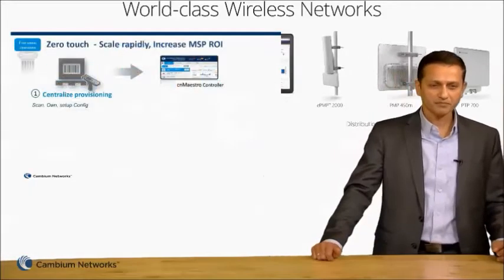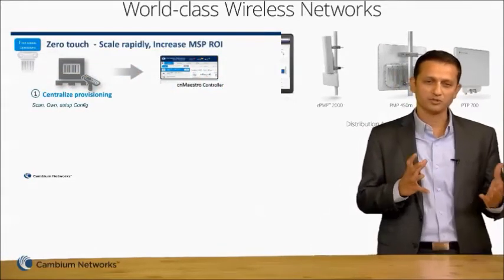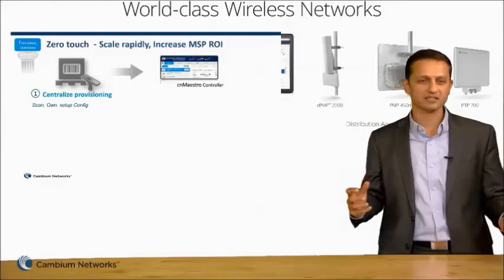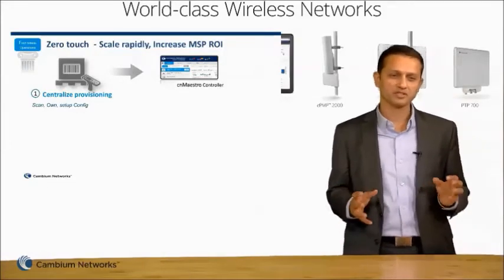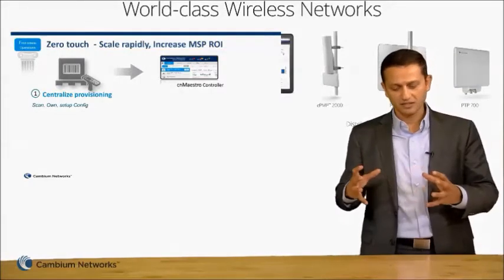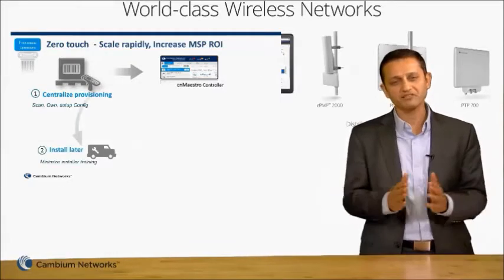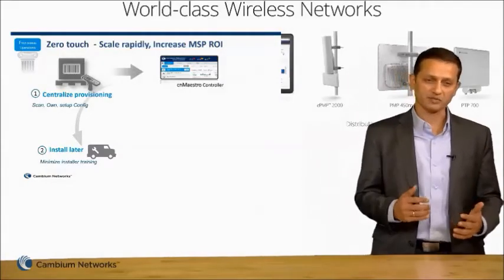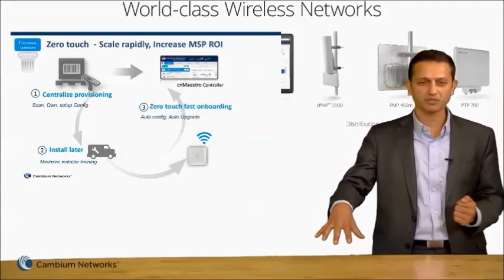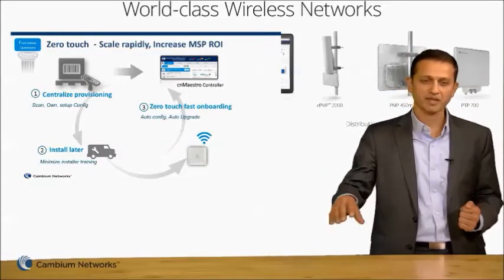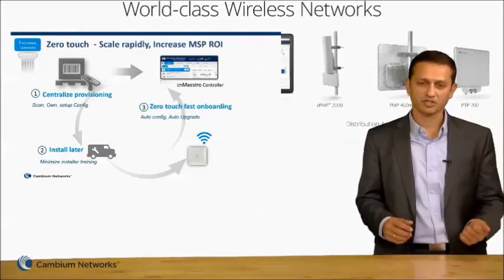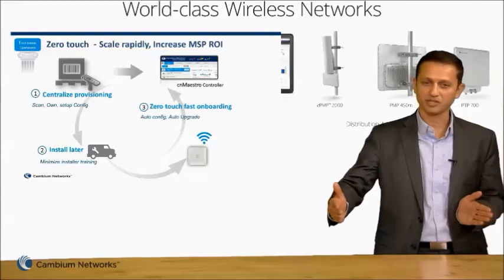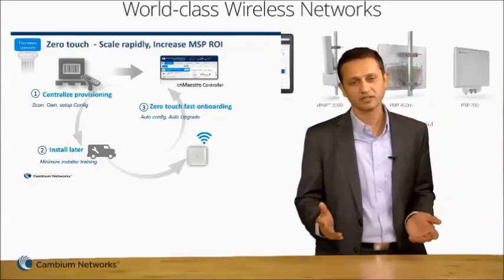With zero touch, in the old world you used to set up the AP and then go install it and then tweak some more in the field. With zero touch we've split the provisioning and the installation activity. Even before you open the AP out of the box you can set it up centrally, then train only a few individuals to manage all of your network even as it scales, and outsource installation to a later point. If you're an ISP you could hire a third party for installation and only keep training costs to the installation part. When you install the AP it talks to the controller, downloads the configuration and updates, and is up and running — reducing the time from unpacking to service readiness, which is when the money train starts.